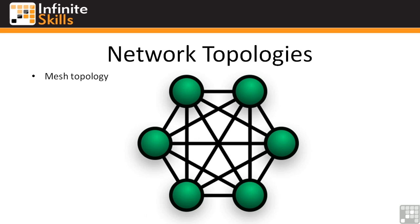The last topology type is the mesh topology. This image shows a full mesh topology where every node is connected to every other node, so any one of these links could go down and you could still get to any other node on the network. You generally only see mesh topology networks on wide area networks because of the cabling requirements — in a simple network with just six nodes, every workstation has to have five network cards and five cables going to each of the other nodes. It's very unwieldy, and it's only really used for frame relay networks.